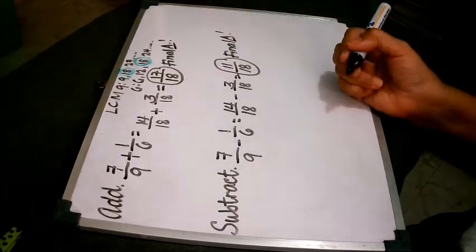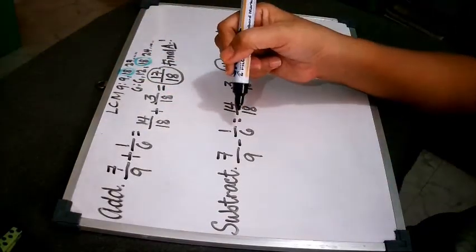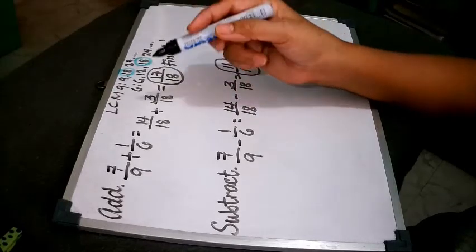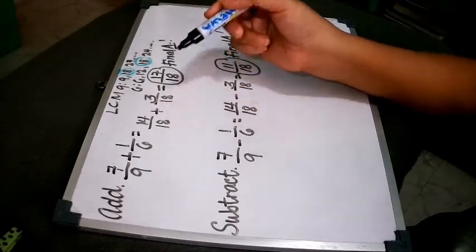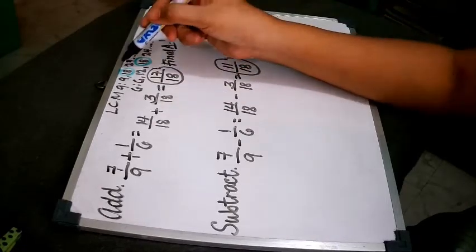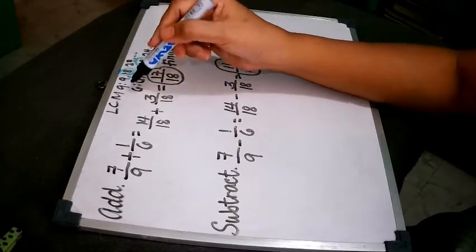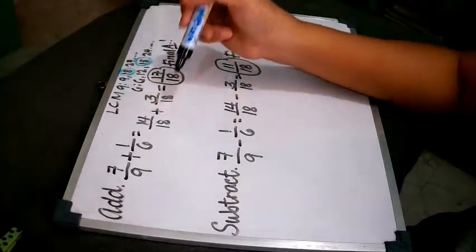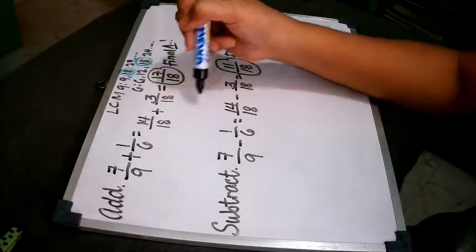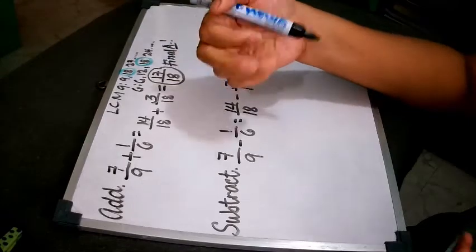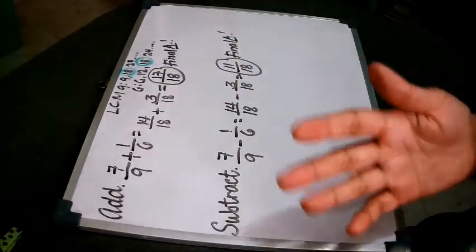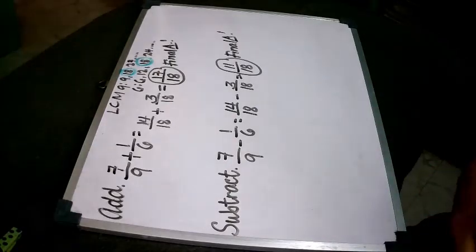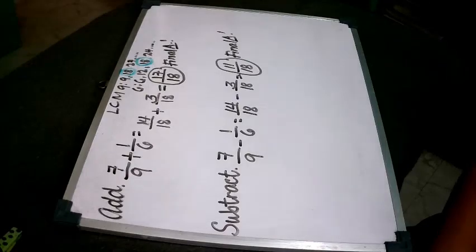That's how we add and subtract fractions that are not the same or not similar. Just consider finding the LCM so that you can make them similar. And when they are similar already, it's very easy. You can do it very smoothly. And the last thing that I have to remind you, see to it that your final answer should be in the simplest form. That's it.